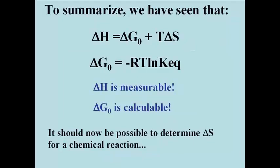To sum up, the change in enthalpy, or delta H, is a measurable quantity using a calorimeter, and the standard free energy change, or delta G0, is a calculable number using equilibrium constants and plugging it into the Boltzmann equation. Knowing delta H and delta G0, it's a simple matter to calculate the entropy change for the reaction.